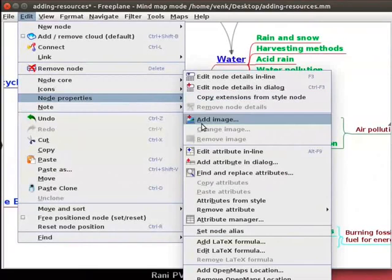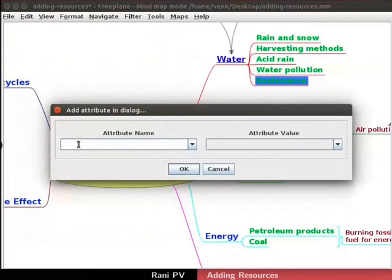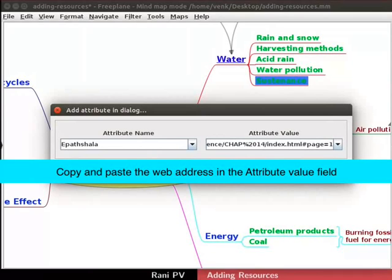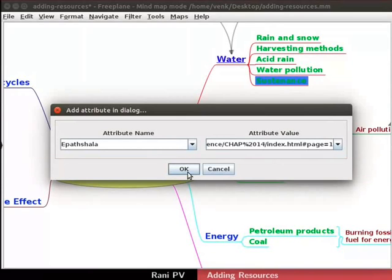From the submenu choose Add Attribute in Dialog. I will add the NCERT textbook hyperlink for the chapter link here. For attribute name I will type E-Pathshala. For attribute value I will add the web address for the textbook chapter. I had already obtained the address by web search. Copy and paste the web address in the attribute value field. Click on the OK button to add an attribute.